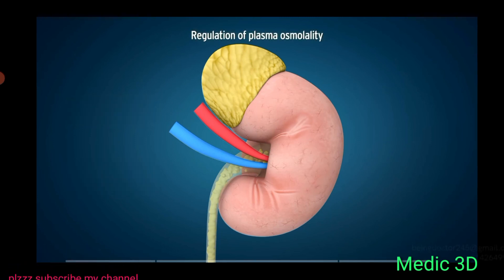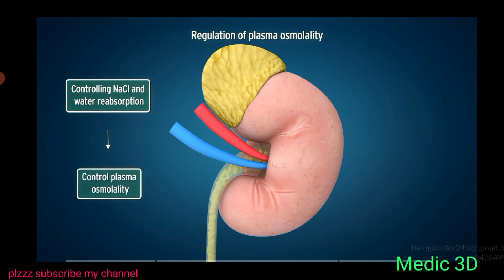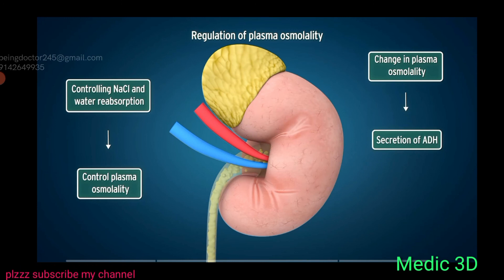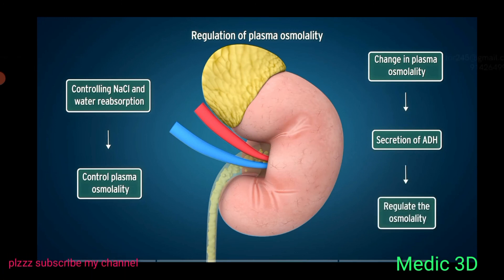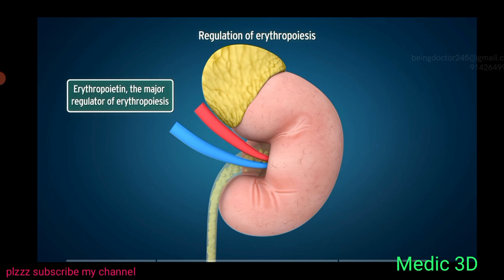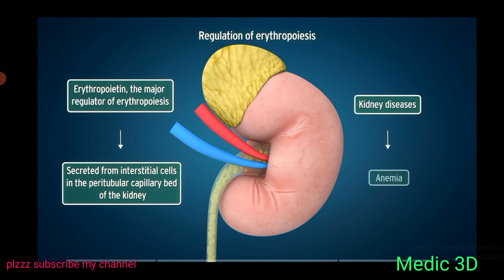By controlling sodium chloride and water reabsorption, kidneys regulate plasma osmolality. Changes in plasma osmolality provide a feedback signal for the secretion of ADH, which acts on the kidney to regulate osmolality. Erythropoietin, the major regulator of erythropoiesis, is secreted from interstitial cells in the peritubular capillary bed of the kidney; therefore, kidney diseases result in anemia.